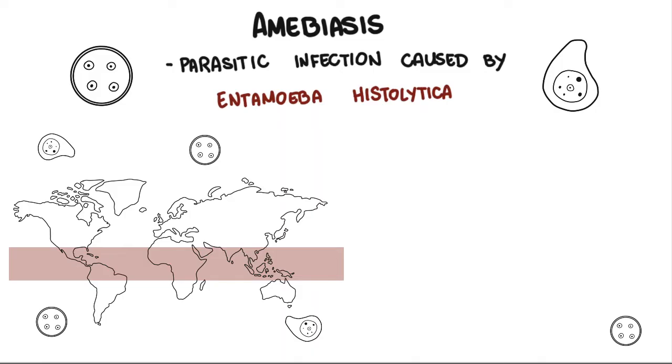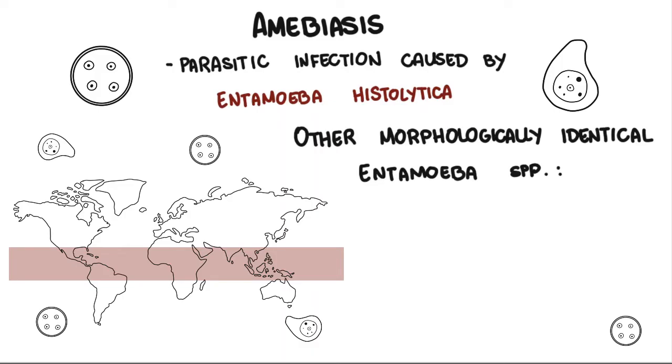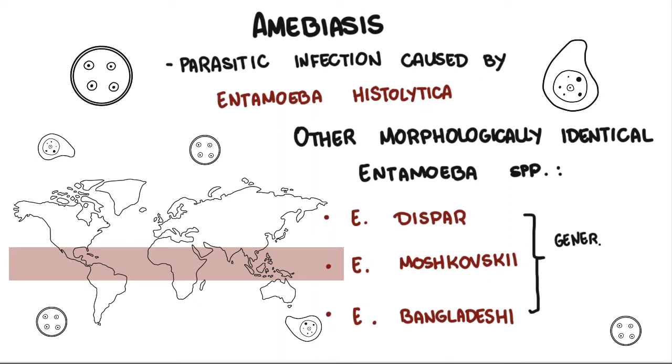It's associated with intestinal and extra-intestinal infections. Other morphologically identical amoeba species include Entamoeba dispar, Entamoeba moshkovskii, and Entamoeba bangladeshi, and these are not generally associated with disease.